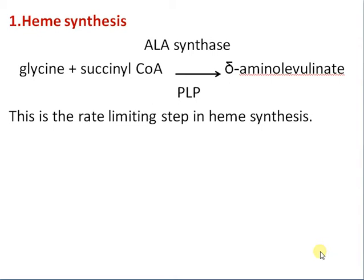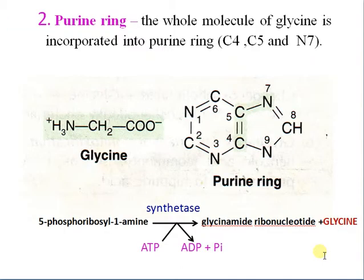Coming to heme synthesis: glycine combines with succinyl-CoA to form delta-aminolevulinic acid (ALA), by the enzyme ALA synthase with the help of pyridoxal phosphate. This is the rate-limiting step in heme synthesis.